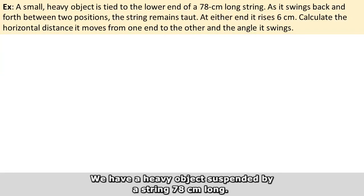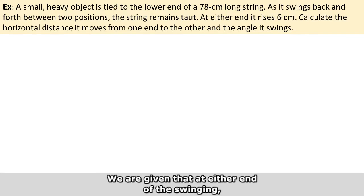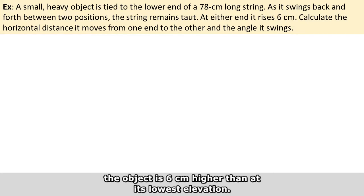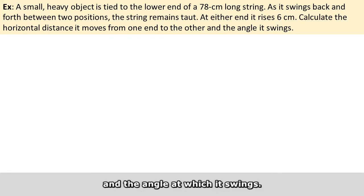We have a heavy object suspended by a string 78 cm long. As the object swings back and forth, the string remains straight. We are given that at either end of the swing, the object is 6 cm higher than at its lowest elevation, and we have to calculate the horizontal distance between the two ends and the angle at which it swings.